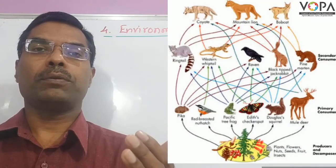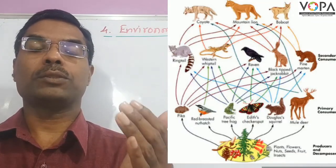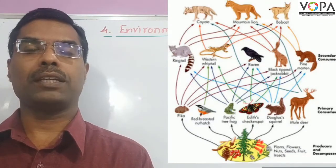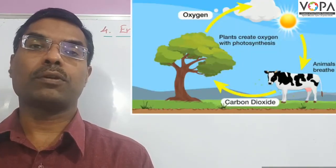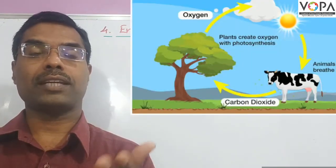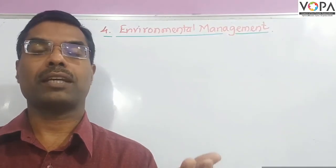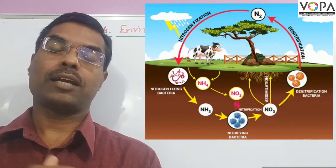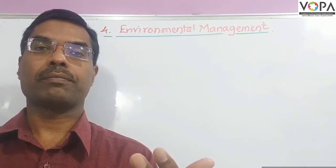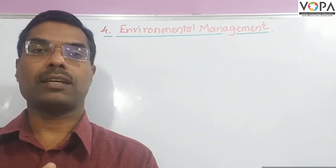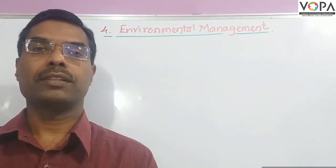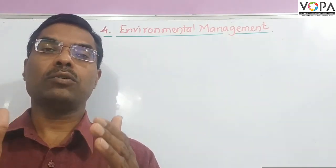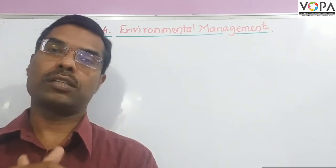Every ecosystem has two important characteristics: the unidirectional flow of energy, and the cyclic flow of nutrients — like the oxygen cycle, nitrogen cycle, carbon cycle, etc. These are the biogeochemical cycles. For a healthy ecosystem, cyclic flow of nutrients and unidirectional flow of energy are the two important characteristics.